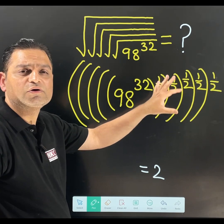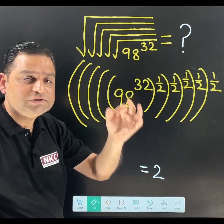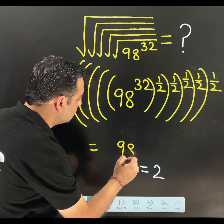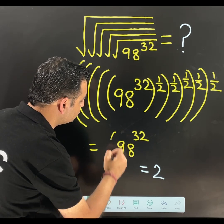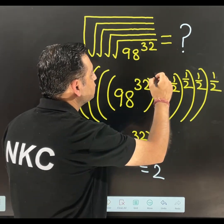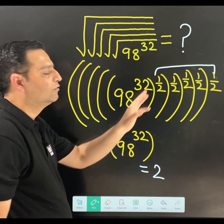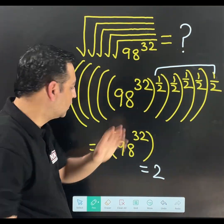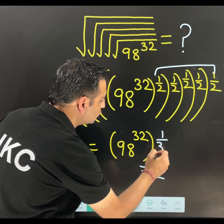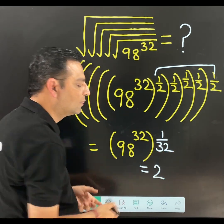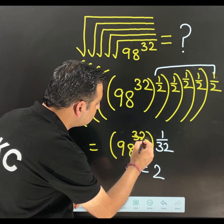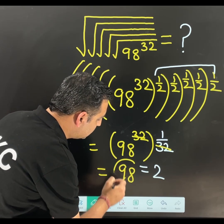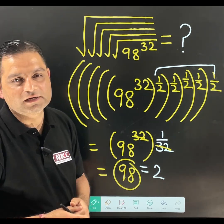Each square root is written as 1 over 2. Now just use the law of exponents — for 98 to the power 32, we multiply all the exponents: 1 over 2 multiplied by 1 over 2, five times in total, giving us 1 over 32. And then this 32 in the exponent and the 32 in the base cancel each other. You will get 98 as the final answer.